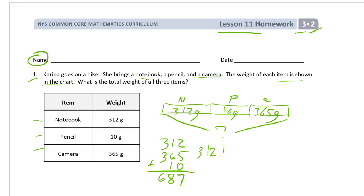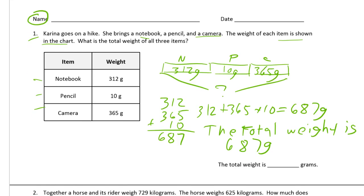So 312 plus 365 plus 10 equals 687 grams. The total weight is 687 grams.